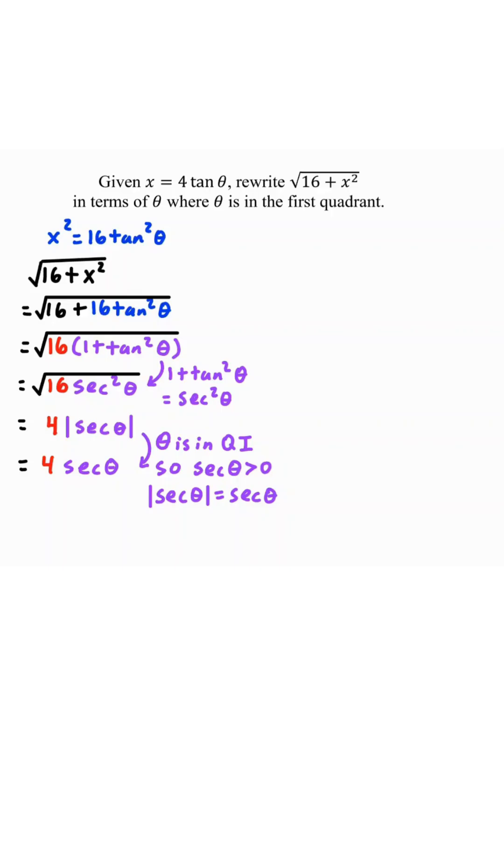This is one way to solve. Another way to solve is we'll take a look at this x equals 4 tangent theta. Divide both sides by 4. Recall that tangent of theta is opposite over adjacent. So draw a right triangle with opposite x and adjacent 4.